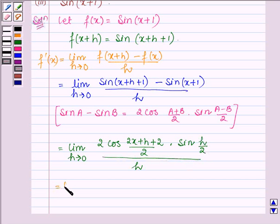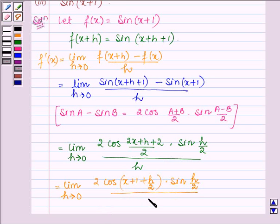This is further equal to limit as h approaches 0 of 2 cos of x plus 1 plus h over 2, times sine h over 2, over h.